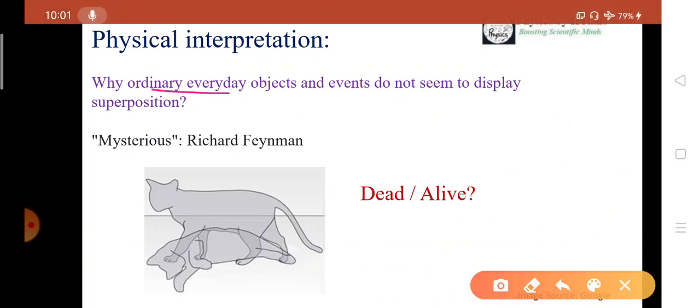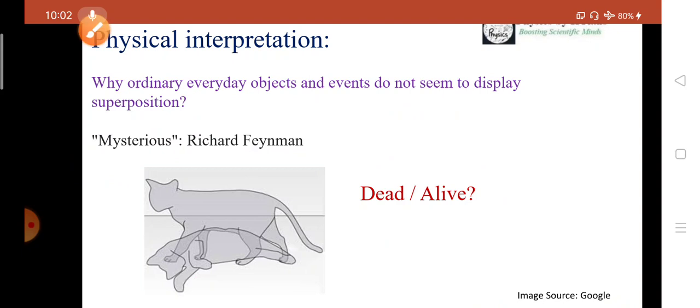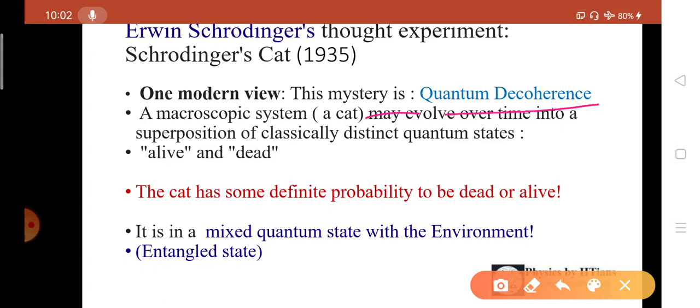Another question: why do ordinary everyday objects and events not display any superposition? This is such a mysterious thing and was stated by Richard Feynman. We will understand this cat experiment, a hypothetical experiment given by Schrödinger: is the cat dead or alive in his famous thought experiment. Erwin Schrödinger's thought experiment, Schrödinger cat in 1935, proposed that in quantum mechanics this cat can be in a superposition of both dead and alive.